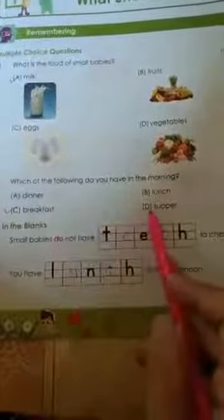Which of the following do you have in the morning? A. Dinner, B. Lunch, C. Breakfast, D. Supper. So what we have in the morning? Breakfast. So C, we will write here. C.